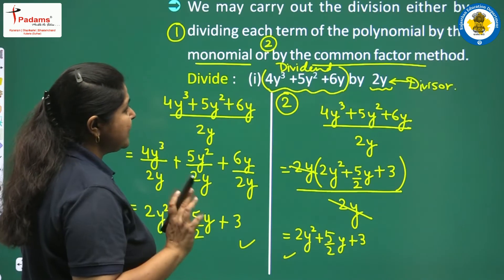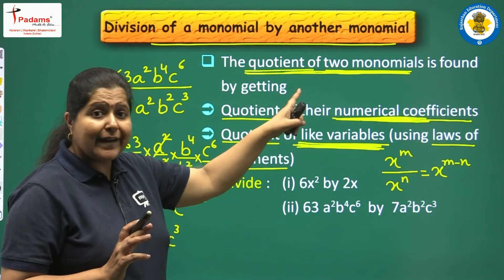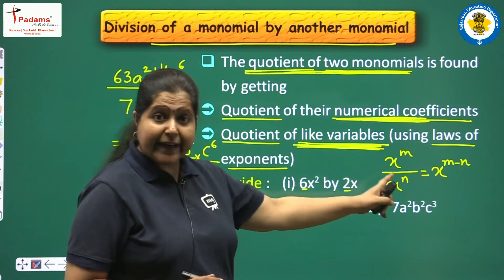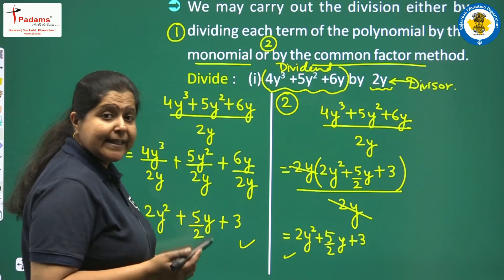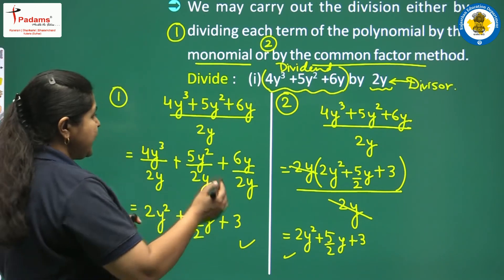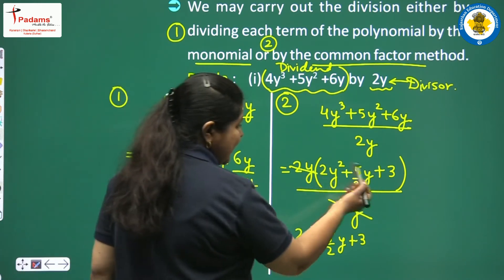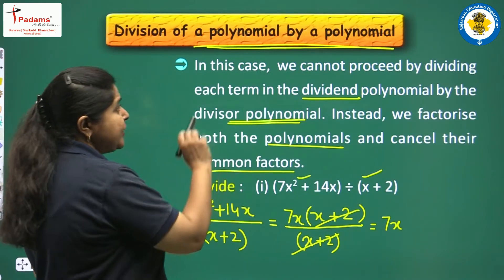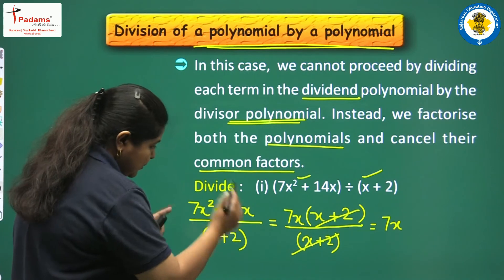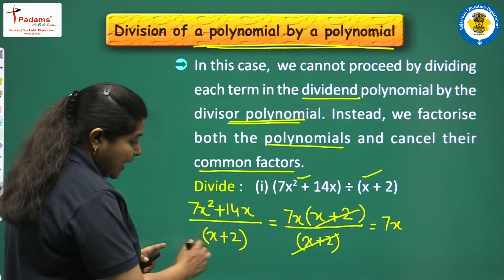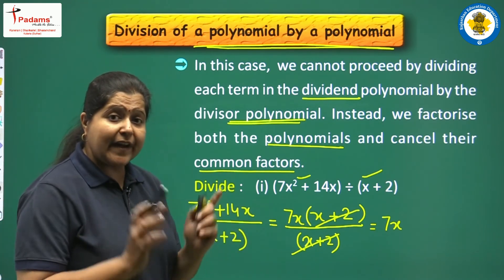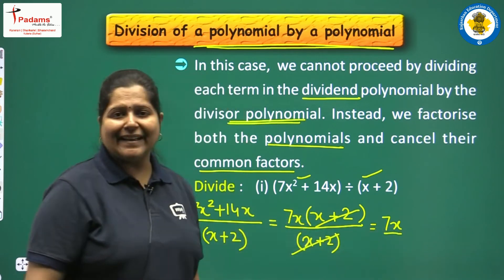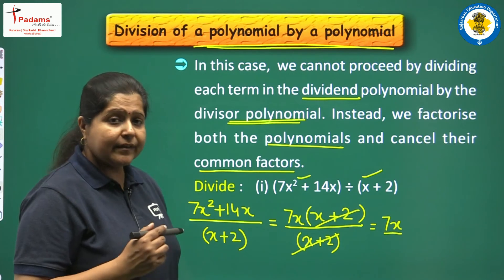Revision: when dividing two monomials, divide the numerical coefficients and divide the like variables using laws of exponents. If your divisor is not in factor form, factorize it and write it in factor form, then the like factors will cancel out and you will get the answer.